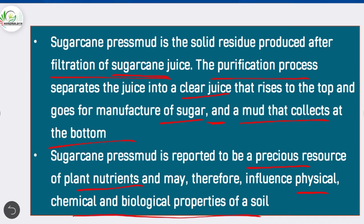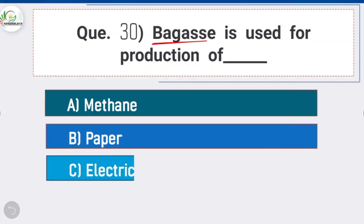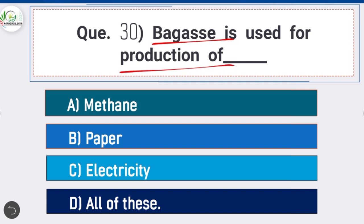Question 30: Bagasse is used for production of — option D is correct: all of these. Bagasse is the dry, pulpy, fibrous residue that remains after sugarcane or sorghum stalks are crushed to extract their juice. It is used as a biofuel for the production of heat, energy, and electricity.